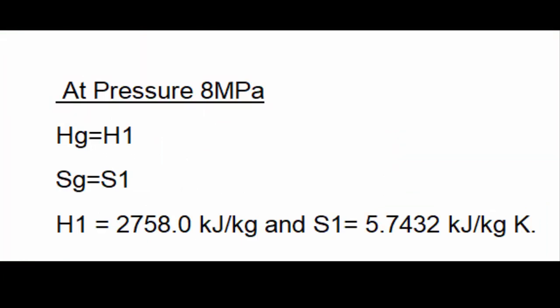At stage 1, the enthalpy Hg came as H1 = 2758 kilojoules per kilogram and its entropy S1 = 5.7432 kilojoules per kilogram Kelvin. To find this enthalpy you have to refer to your thermodynamics book. At the end of that book there will be table A-2. In that table you have to go to the specific pressure and then see the enthalpies. These enthalpies are taken at Hg and Sg. So let's go to stage 2.